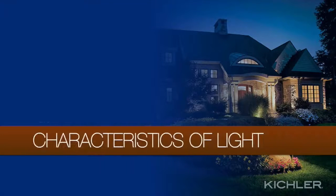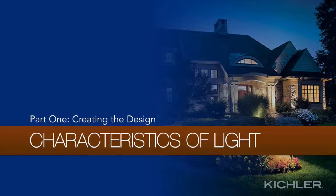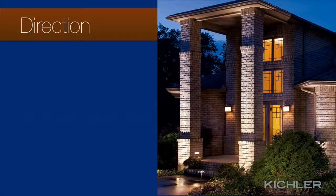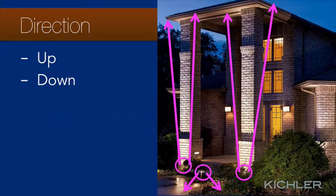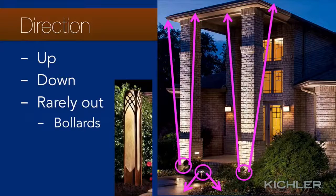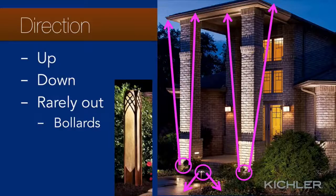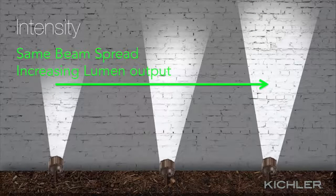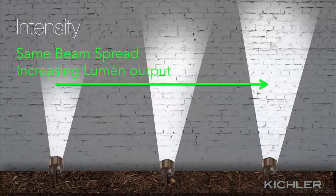Now that we've discussed lighting techniques, let's consider some characteristics of light to help you make the best use of them. Most landscape lights are directed up or down and aimed at plant material or architectural elements — light is rarely directed at the viewer. Bollards are one exception, where the light source is visible and softened by a textured glass cover. There are two main ways to adjust the intensity of light on an object: adjusting the lumen output of the fixtures, and adjusting the beam spread.